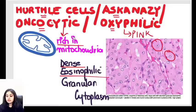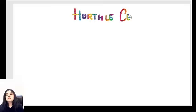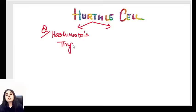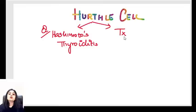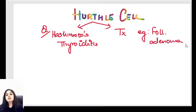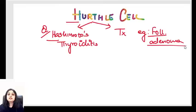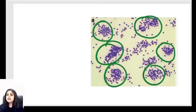Hürthle cells are a non-specific finding. They are seen in two main contexts: number one, Hashimoto's thyroiditis — Hürthle cells are noted in Hashimoto's thyroiditis; number two, tumors — for example, follicular adenoma also shows Hürthle cells. So repeating: Hürthle cells for Hashimoto's, Hürthle cells for follicular adenoma, but this is not a specific finding.